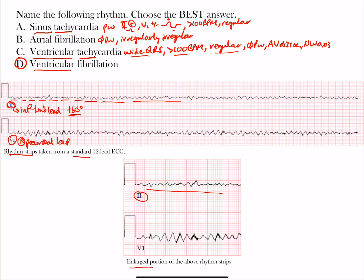V-tach is wide and fast with a regular rhythm — those are the main distinguishing features. Here in ventricular fibrillation you don't see a regular rhythm; there are no clear intervals to measure, so ventricular tachycardia is not correct. Atrial fibrillation is also not correct — with A-fib you may see fibrillatory waves but you still see QRS complexes with none of the R-R intervals being the same, which is why it's irregularly irregular. But you do have recognizable complexes in A-fib, whereas here you have no complexes at all.